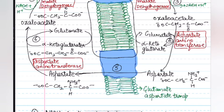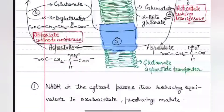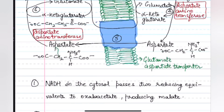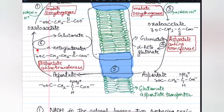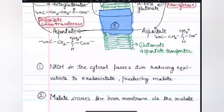This aspartate crosses from the mitochondria to the cytosol with the help of the glutamate-aspartate transporter. Once aspartate reaches the cytosol, the enzyme aspartate aminotransferase converts aspartate back to oxaloacetate, and that is how oxaloacetate is regained. Alpha-ketoglutarate, which was produced in the mitochondria, is again regained back to glutamate. In this way, NADH is transported across the impermeable inner mitochondrial membrane.